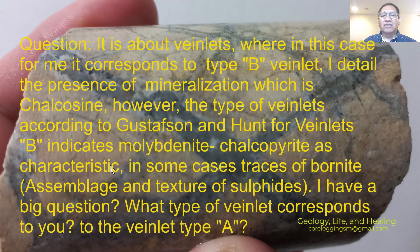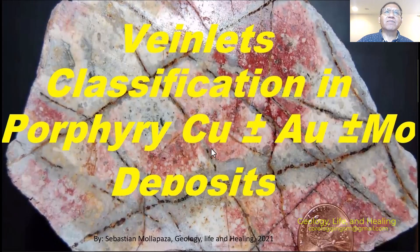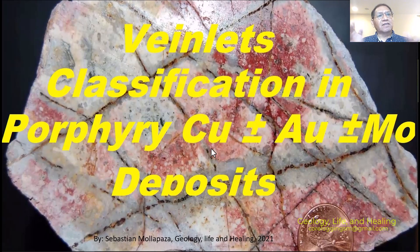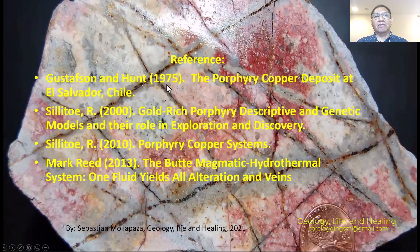The subscriber has a big question: what type of veinlets corresponds to veinlet type A? So in order to answer that question, let's take the reference veinlets classification from Prof. Kapper gold and molybdenite deposits. In this channel you can find it in this presentation, and you have all the answers. The next reference in the same presentation is the subscriber's reference to Gustav Hant of 1975.